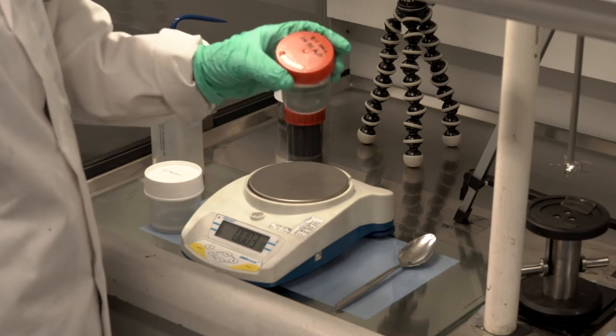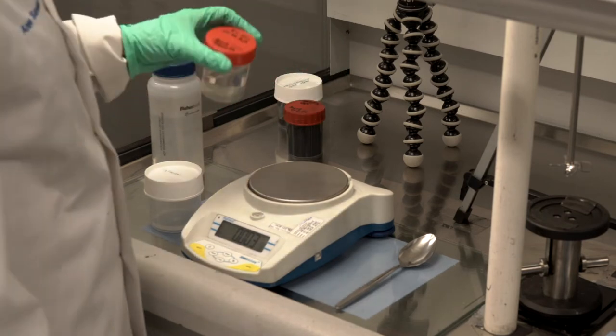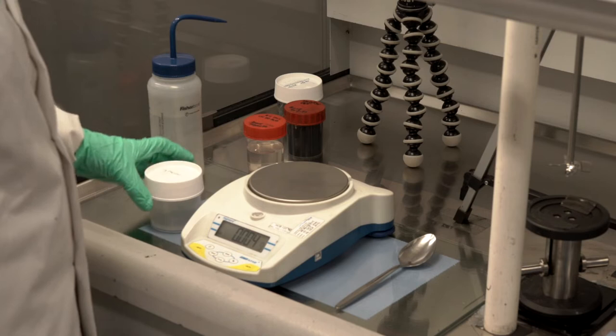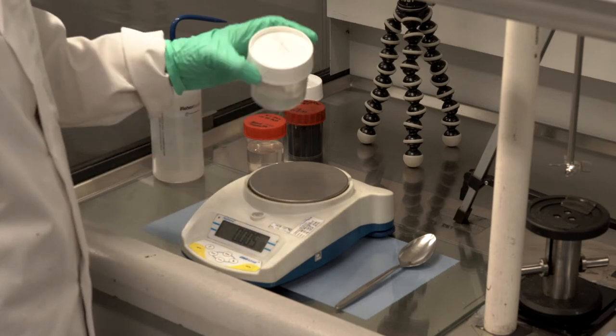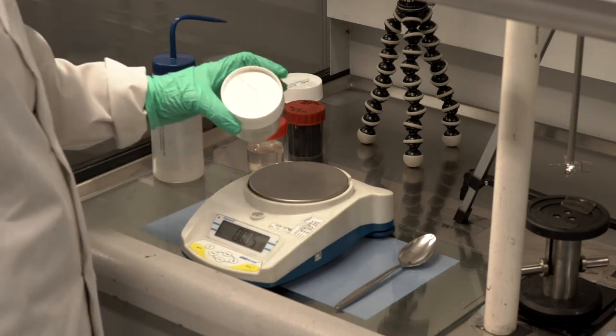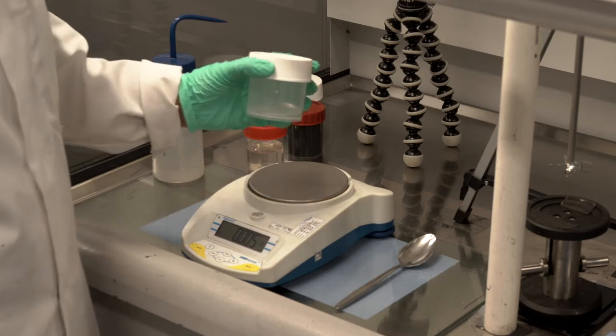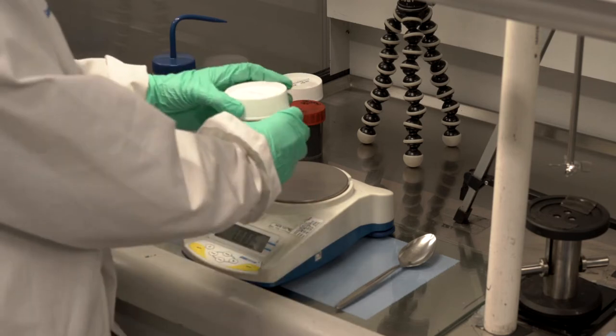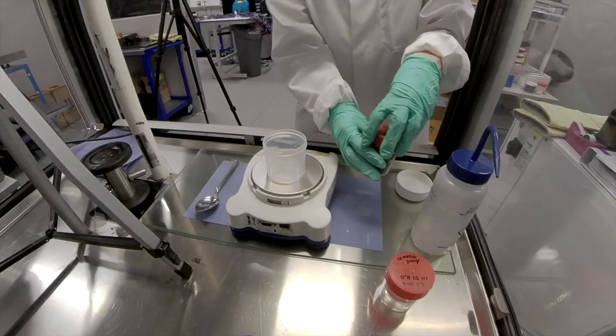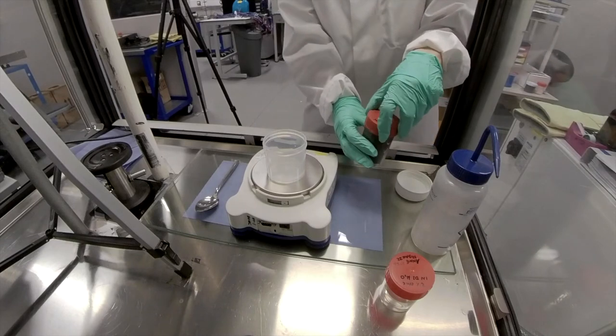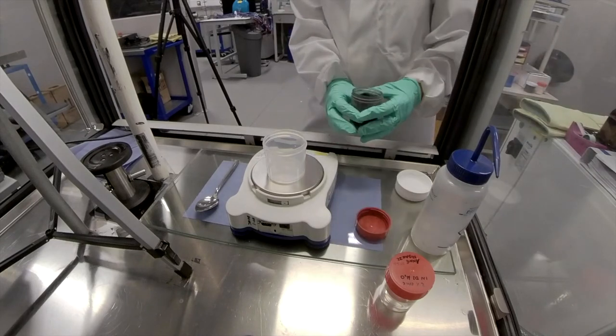I start one batch of my hard carbon slurry with 12 grams of that solution, to which the first ingredient I'll add is my conductive additive. I want to add 0.24 grams of carbon black.